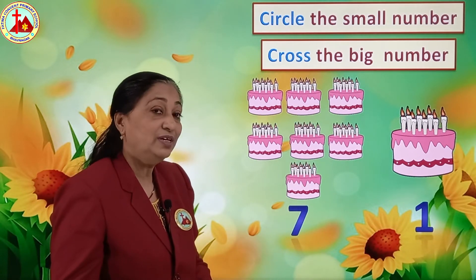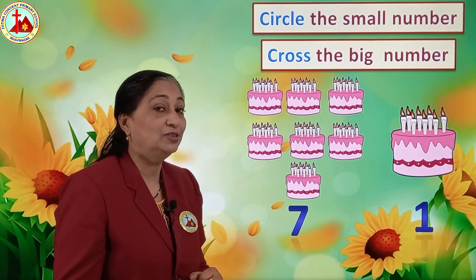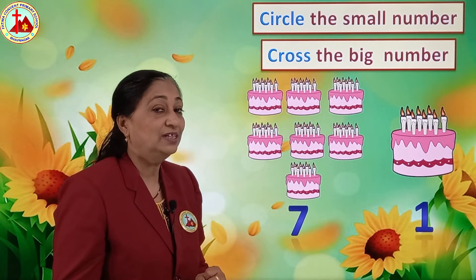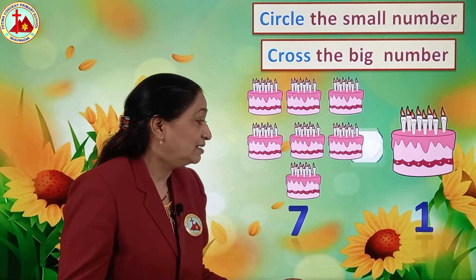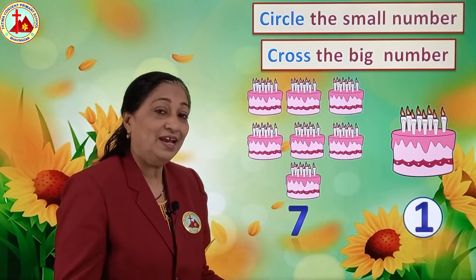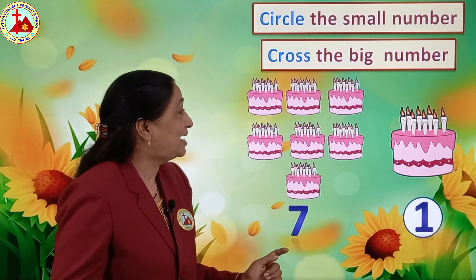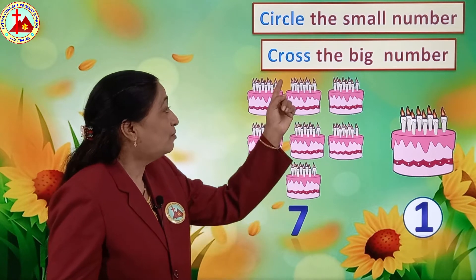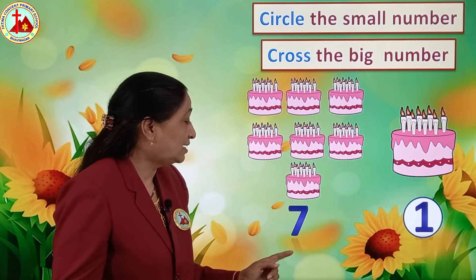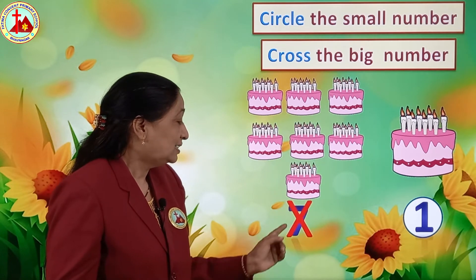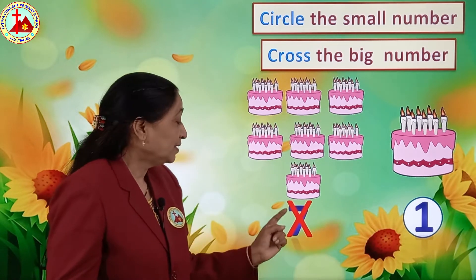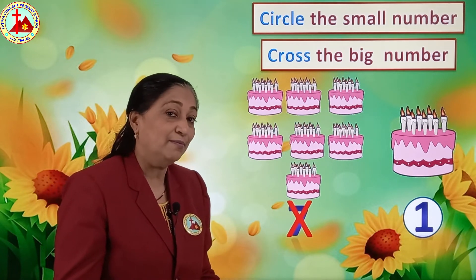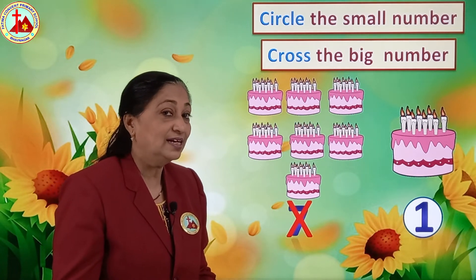So we will circle which number - 1 or 7? Everyone knows. Tell me which number we are going to circle - 1 or 7? Very good - number 1. Now which number will we cross? Number 7. So 1 is the small number and 7 is the big number.